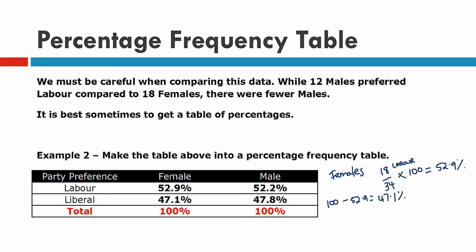Now we'll do the male Liberal. There are 11 males who preferred Liberal out of 23 males. Again, to convert it to a percentage, we multiply by 100, and when we work that one out, we end up getting 47.8%.